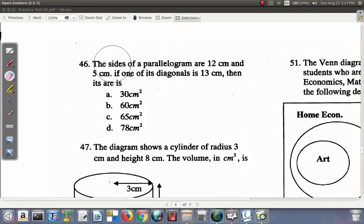Erase these rough work. The sides of a parallelogram are 12 cm and 5 cm. If one of the diagonals is 13, then its area is—should be area, A-R-E-A.